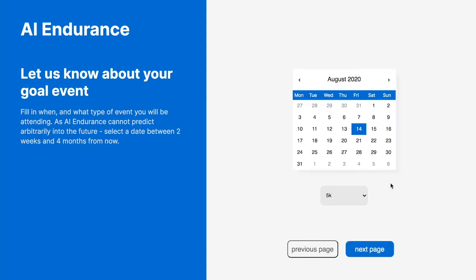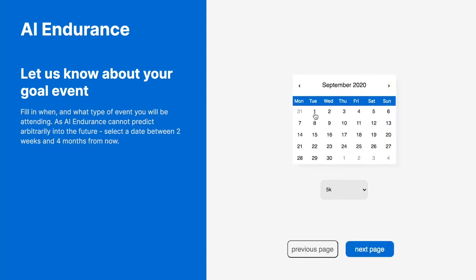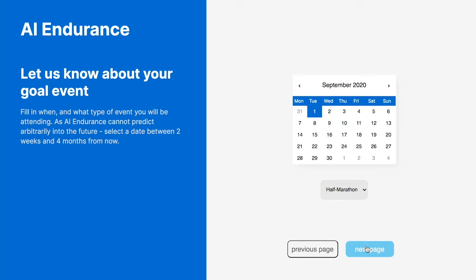The next step is to select the date and type of the goal event. In this example, I am signing up as a runner, so the options include the most common running distances. These options will differ for cyclists and triathletes. Given the restrictions on racing related to COVID-19, we are also currently working on a maintenance mode option that would allow users to simply maintain their current fitness level as opposed to optimizing towards a race.